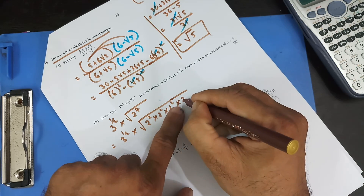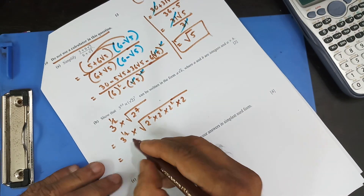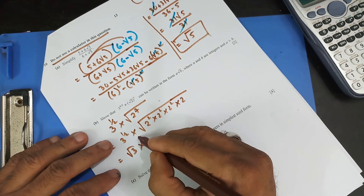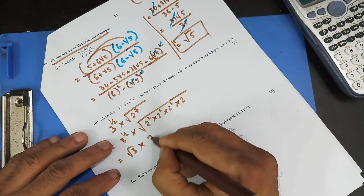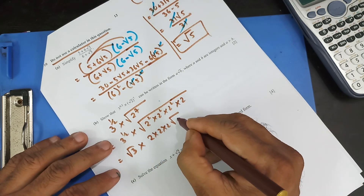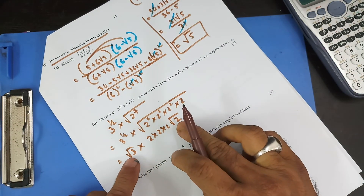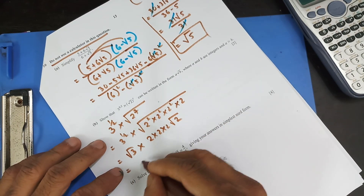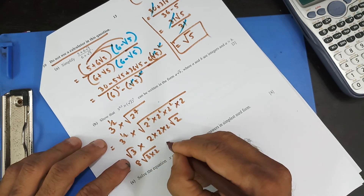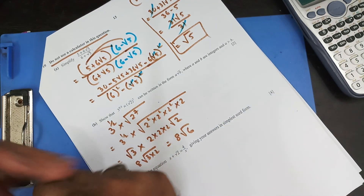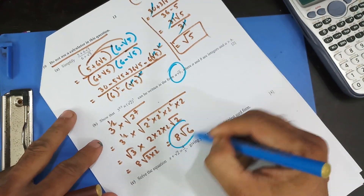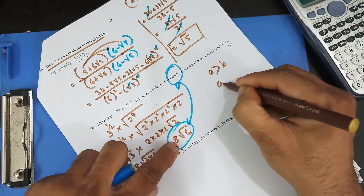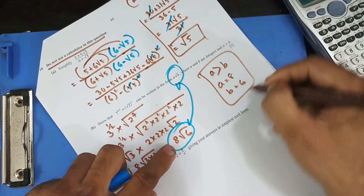I need one more power of 2, so I add one more 2 with power 1. These pairs can be taken out of the square root: 2 times 2 times 2 gives 8, with a remaining square root 2. Since different bases have the same power, we can take that common: it's 8, and 3 times 2 gives 8 square root 6. Comparing with a square root b: a is 8 and b is 6, so that's my answer.